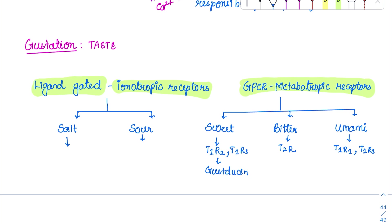For salt taste, the specific receptor is ENAC — epithelial sodium channel. In our renal system we will discuss the same channel. For sour taste, ENAC channels can also sense it. At the same time, there are other channels like H-plus channels — proton pump channels can also sense the sour taste.